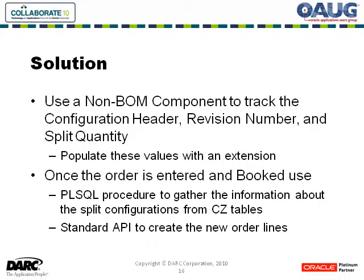The solution: we used a non-BOM component to track the configuration header, the revision number, and the split quantity. We populated these values using a configurator extension. Once the order was entered and booked, we used a PLSQL procedure to gather information about the split configurations from the CZ tables. Using this information, we called the standard API to create the new order lines.